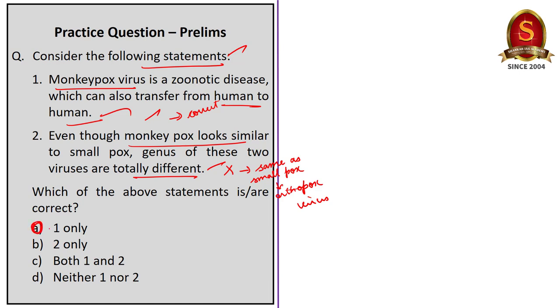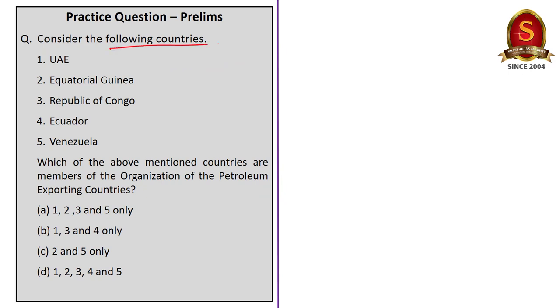Now coming to the second question. Consider the following countries. Here the question is which of the above mentioned countries are members of organization of the petroleum exporting countries. All the countries except Ecuador are members of OPEC. As we see in our discussion, Ecuador left OPEC in January 2021. So the correct answer for the question is option A, one, two, three, five only.